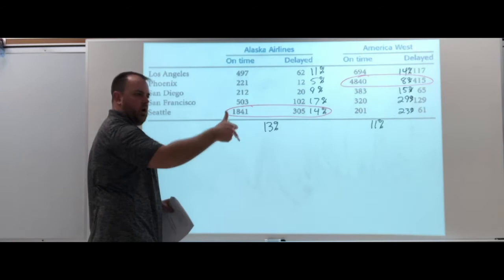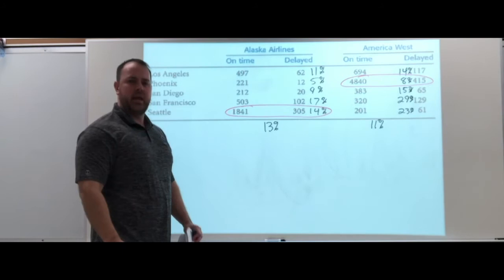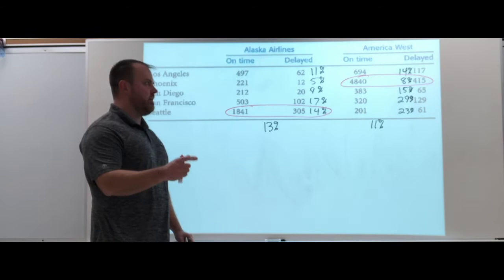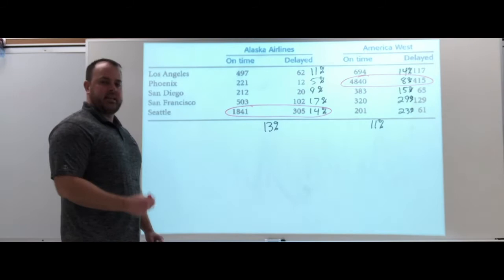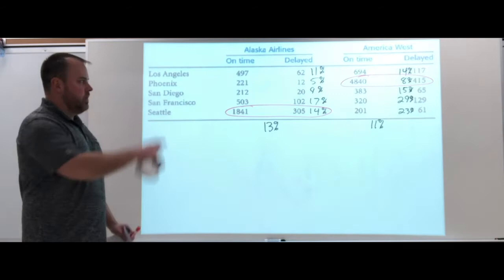Seattle has a higher percentage of delays with more flights. That's bringing the Alaska airline overall up. The high volume from Phoenix at a lower percentage, that 8% is the lowest percent for delays for America West. That high volume and low percentage brought their overall down under where Alaska was.